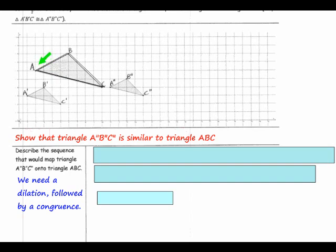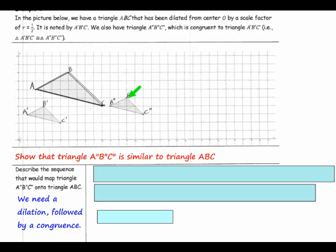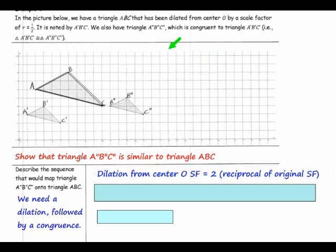This was dilated from center O using a scale factor of one half. To undo that back to the original size, we will need to use the reciprocal of the scale factor. The original scale factor was one half, so we will use the reciprocal of one half, which is two. So we are doubling this figure — point A will end up here, point B here, and point C here. Our triangle will be twice the size and will be in this location.